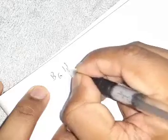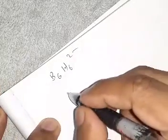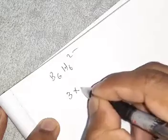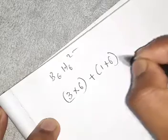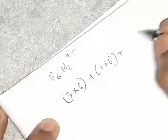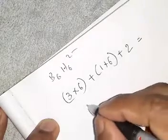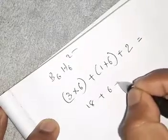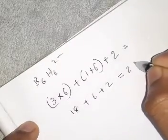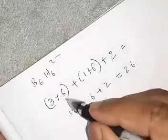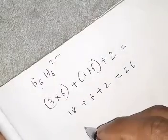Next example: B₆H₆²⁻. The boron outer electron number is 3. So: 3 into 6 (number of boron atoms) plus 1 into 6 plus 2 (for the 2 minus charge). That equals 18 plus 6 plus 2 equals 26. So the structure is Nido, and the structural type is Arachno.